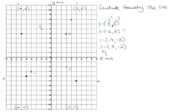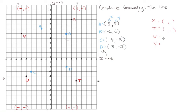You need to know how to plot points on the coordinate plane, which quadrant they go into, and also be able to identify the coordinates if you are given points on a graph. Let's call these coordinates X, T, U, and V. You can pause the video now and try to write these coordinates out, then press play to check your answers.